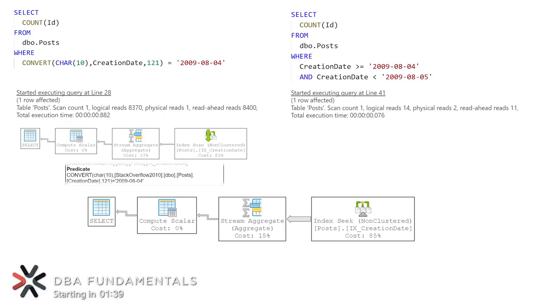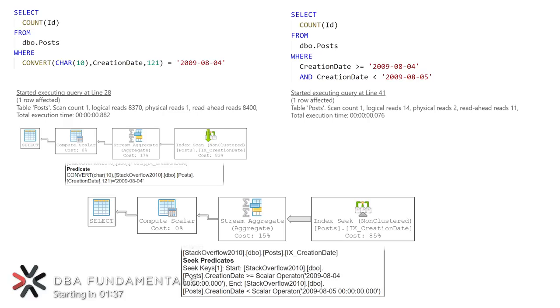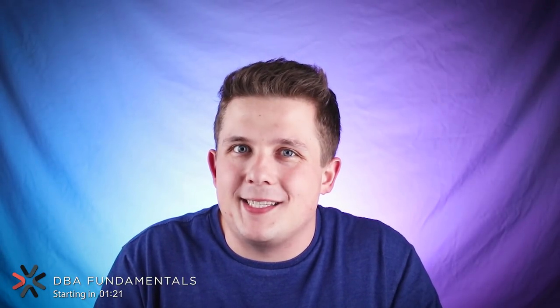That second query doesn't need to perform any kinds of transformations or conversions, and so it only returns the 4,318 rows that fall within that specific date range. We say our first query is not Sargeable because of all these row-by-row transformations — the computations that SQL Server has to make to find the data we requested. Our second query is Sargeable because SQL Server can seek directly to the rows it needs, without needing to perform any extra calculations.